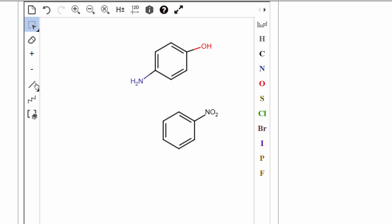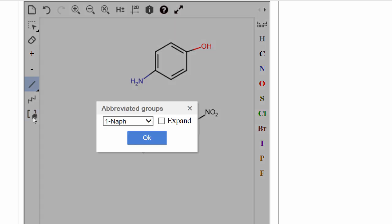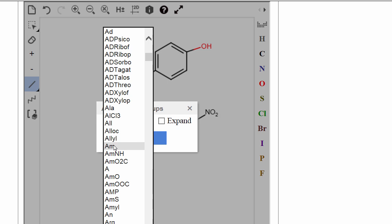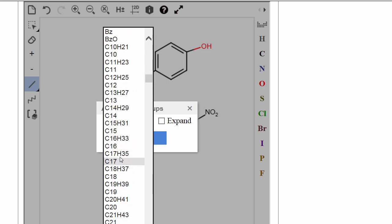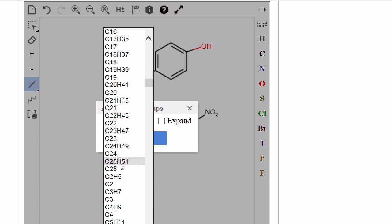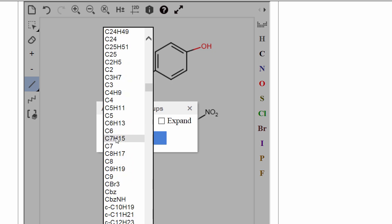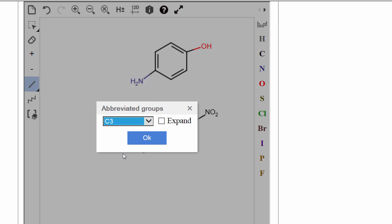Now, let's say I want to put a propyl group here. Again, I have my single bond, and I click the abbreviated groups. I go down here. Here we have all these carbons, carbon chains, carbons with hydrogens. We know a propyl group is a C3. Let's click on that.